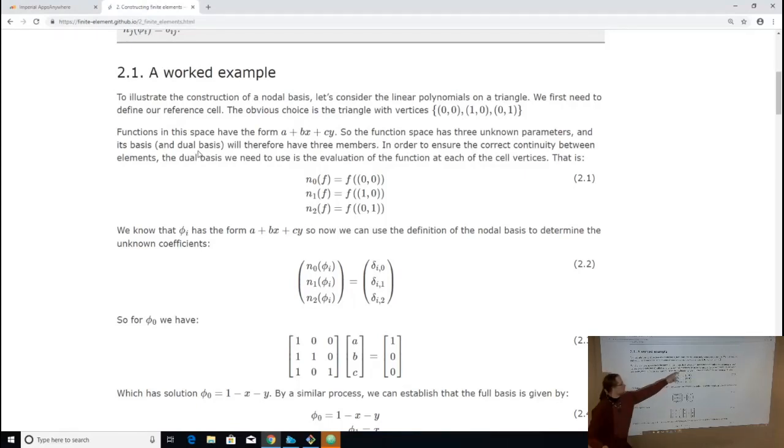Let's assume we've got the reference triangle, so that's the triangle whose corners are the origin and then one up each axis, and we're going to make the linear Lagrange space on there. So the linear Lagrange space is all of the functions which have the form A plus BX plus CY on this triangle.